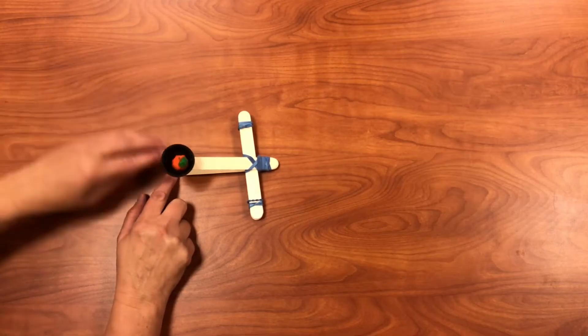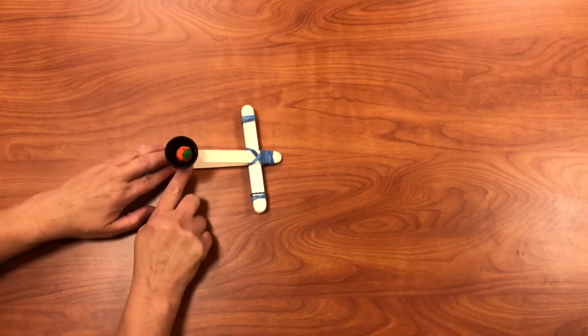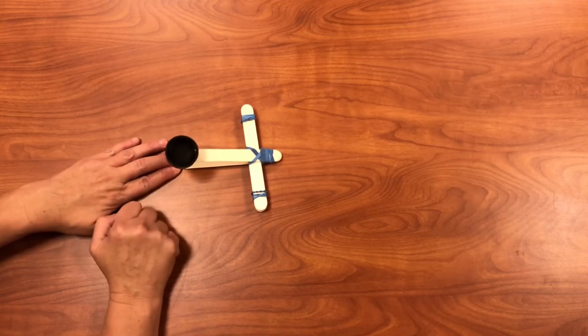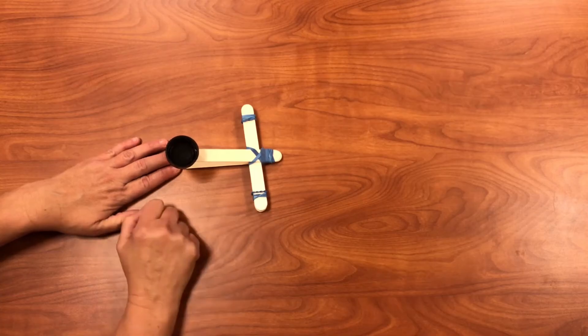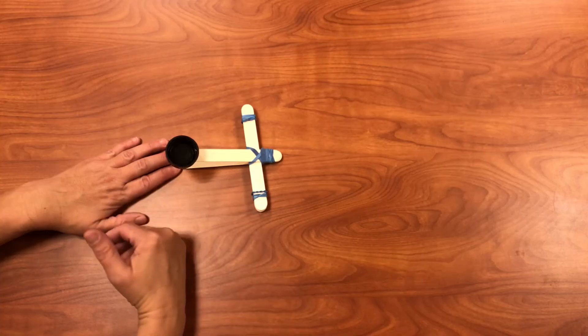So next you're going to stick that candy pumpkin into the lid, hold down on the bottom, pull back, and let go, and your pumpkin will fly.